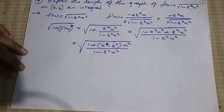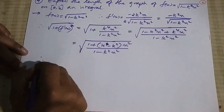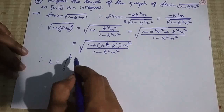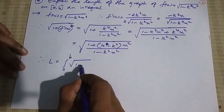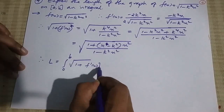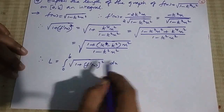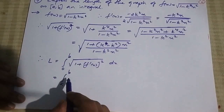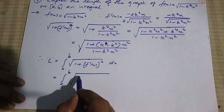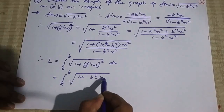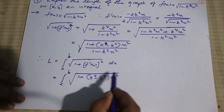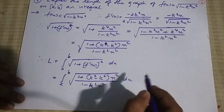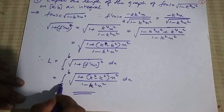So the arc length L = integral from 0 to b of √(1 + [f'(x)]²) dx, which equals integral from 0 to b of √((1 + (k⁴ - k²)x²) / (1 - k²x²)) dx. This is the answer to question number 4.